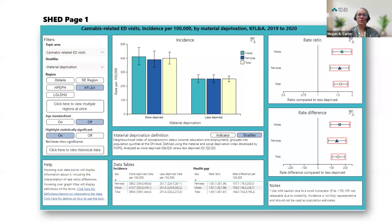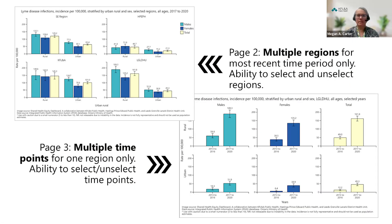The first page is an introduction and overview that provides the most recent data for the selected indicator. You can view a definition of the stratifier and toggle to the indicator, with incidence shown in the middle and health gap graphs on the right. Page two displays multiple regions for the most recent time period only, allowing the user to compare across regions. Page three displays multiple time points for one region, allowing the user to select and unselect time points to compare across time.